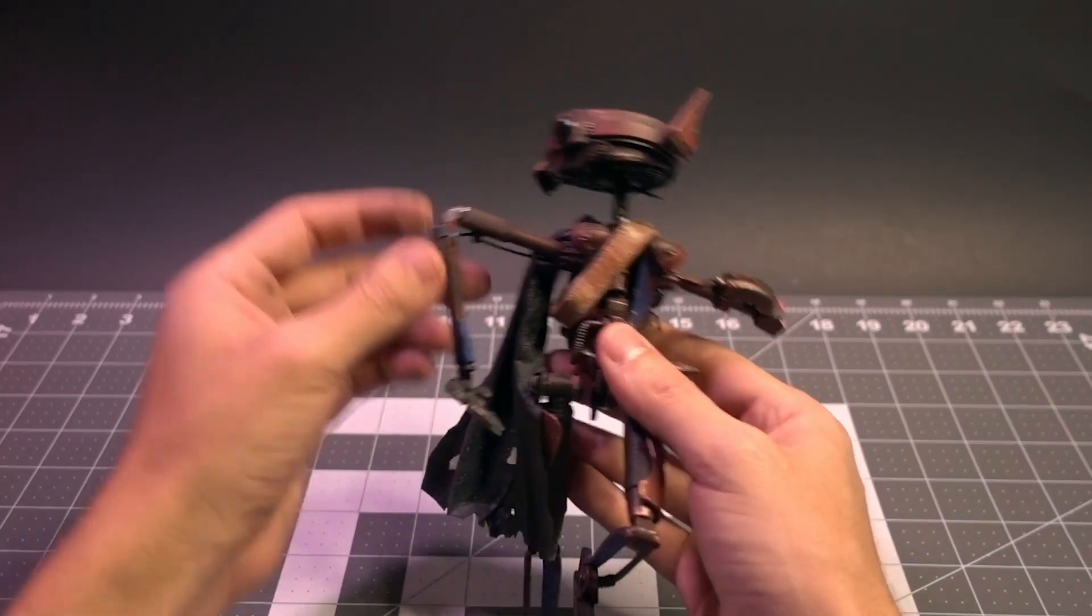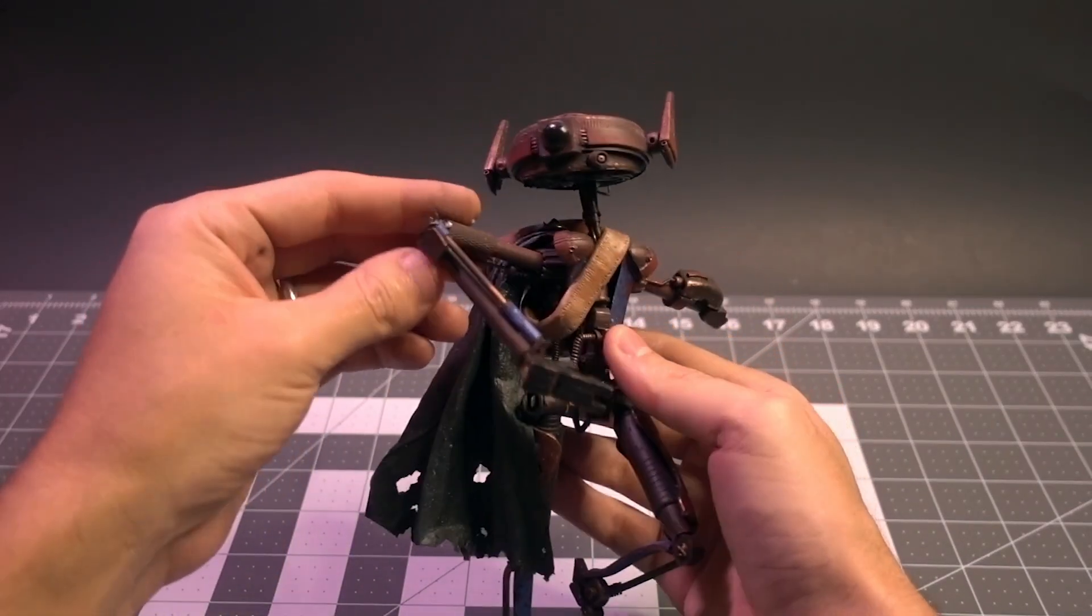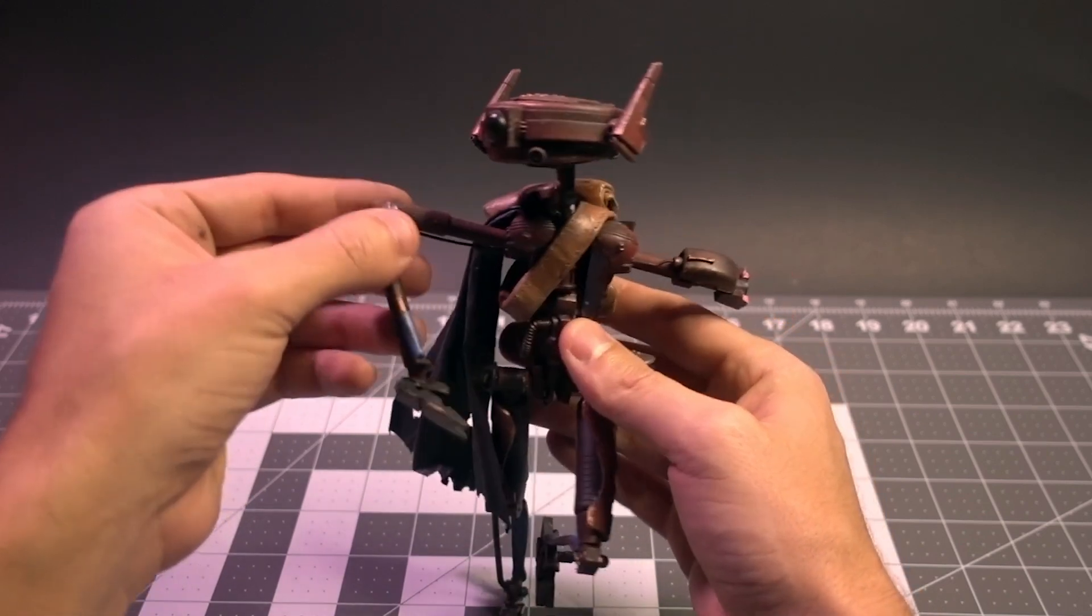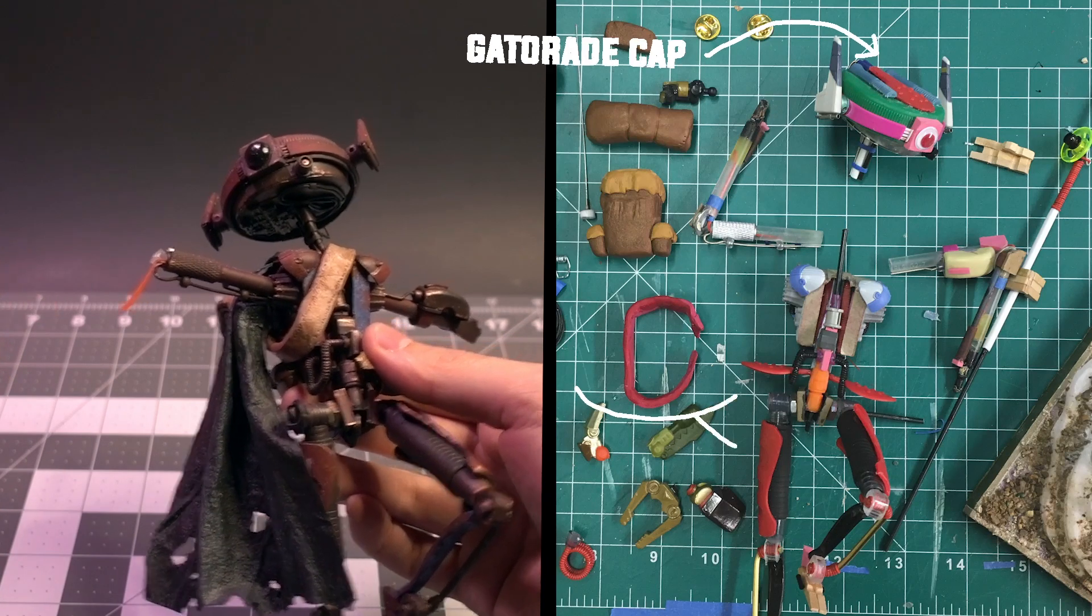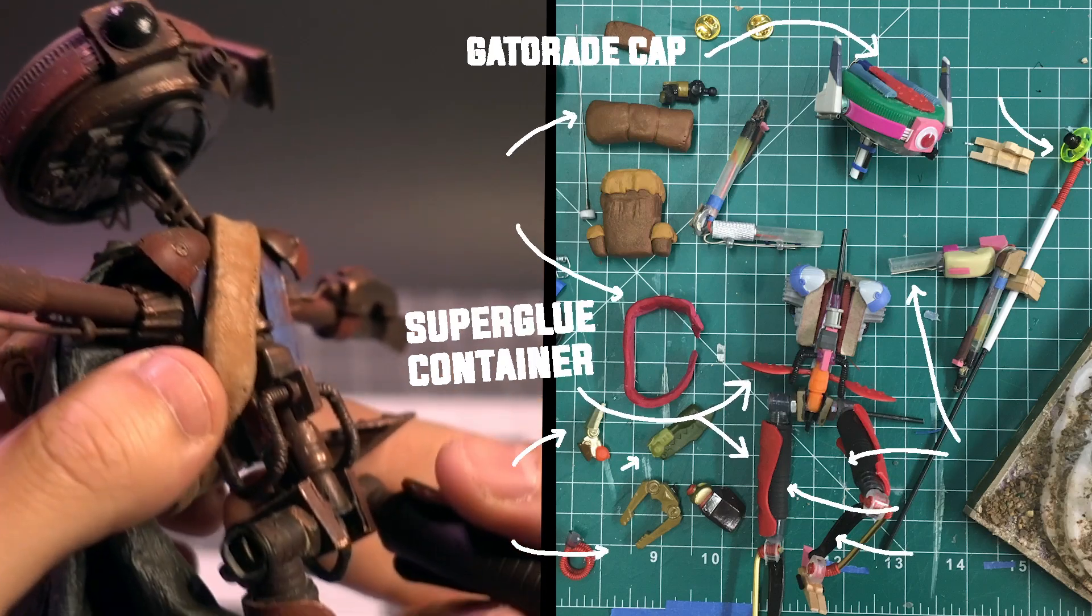This is Mabbit 47, an original droid that was my third scratch building project from back in September of 2021. It was made from a Gatorade bottle cap, superglue containers, and just a bunch of other stuff.